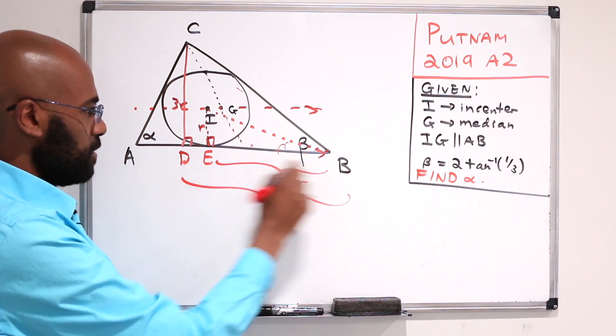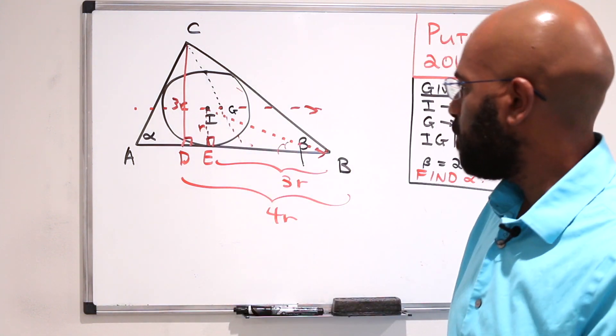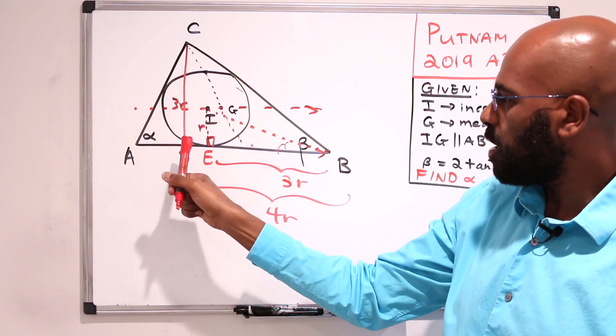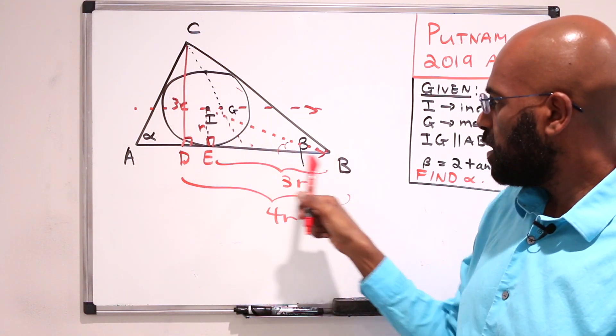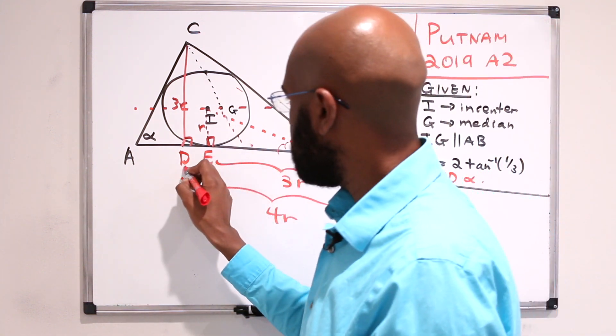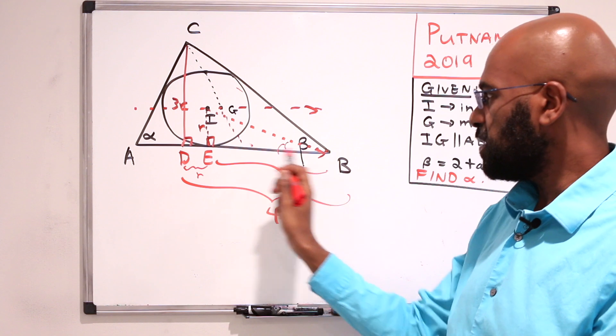So let's write that in. DB itself is 4R. Let's stare at this picture again. So we have a bunch of information now. We have these side lengths: the in radius is R, this is 3R, this whole thing is 4R, and this piece here is 3R. So that actually means that DE is R, because it's the difference of DB and EB.